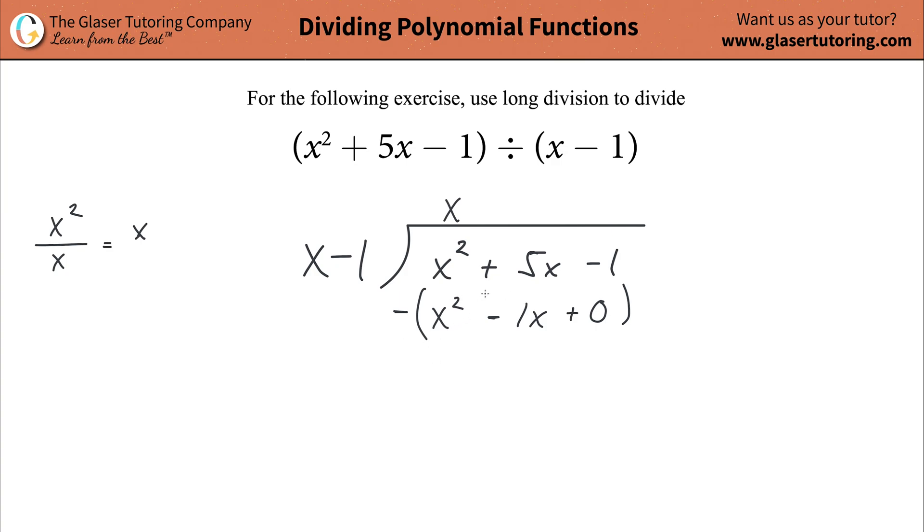Now what we're going to do before we actually do our subtraction is first I want to take this negative sign and I'm going to distribute it. So this negative sign has to be distributed and it will become a negative x squared. Then I'm going to distribute it to the negative one x. So remember, this is going to make a positive, two negatives make a positive. And then when I take this negative symbol and distribute it to the positive zero, it's going to become negative zero. So let's do that distribution. Get rid of this and change your sign. So this is a negative, this is a positive, and then this will be a negative. Now actually do the subtraction. The x squared minus x squared is just zero. Positive five x plus one x is going to be a positive six x. And then negative one minus zero is just negative one.